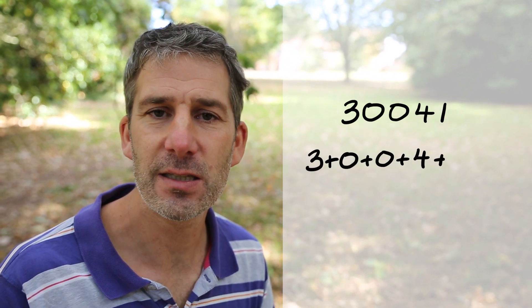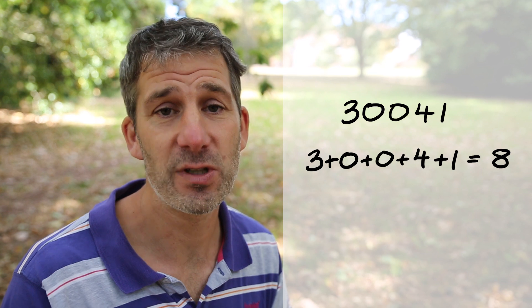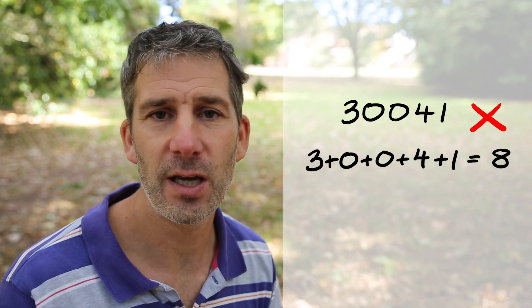All right, but let's say that the number was 30,041. I would add three, add four, add one, which is eight. Well, eight isn't in the nine times table. So therefore, that number is not in the nine times table.